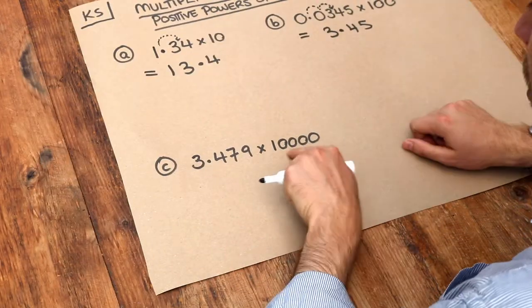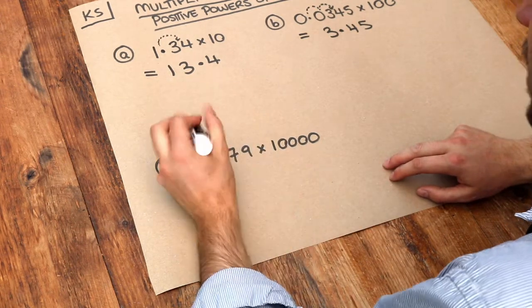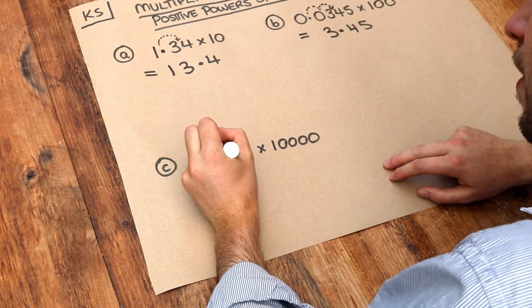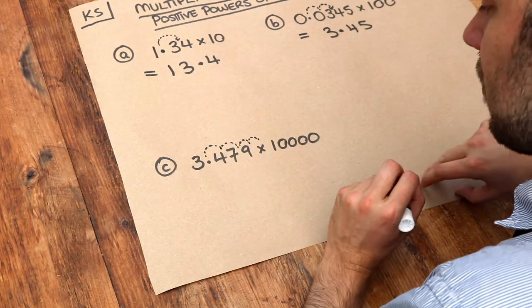And what about this last one? We've got four zeros, so therefore we need to move this decimal point four places to the right. So, one, two, three, four. Uh-oh, well, we've run out of digits.